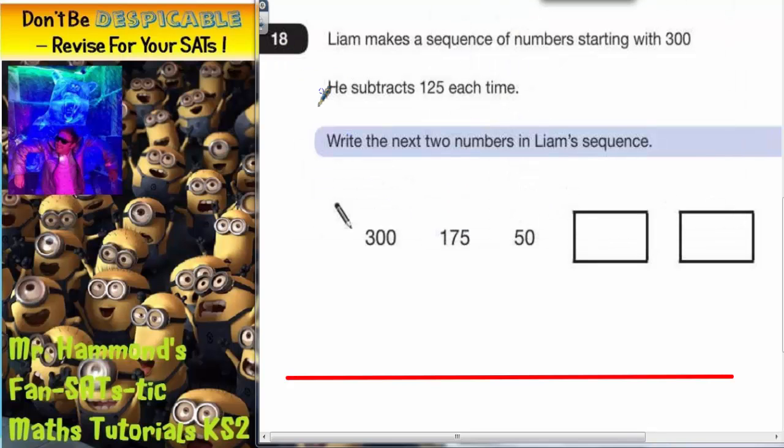Question 18. Liam makes a sequence of numbers starting with 300. He subtracts 125 each time. Right, write the next two numbers in Liam's sequence.